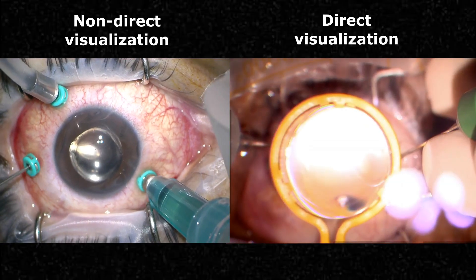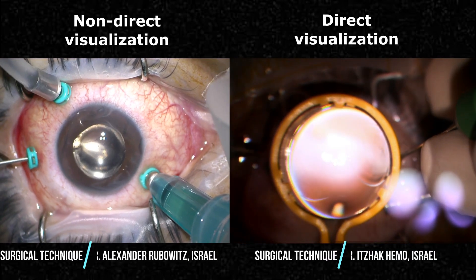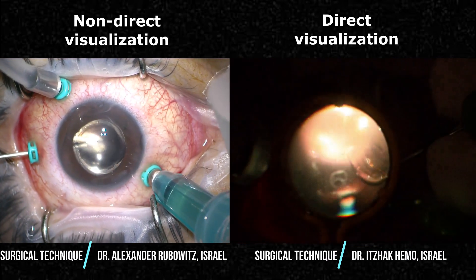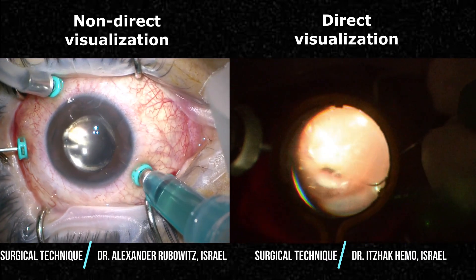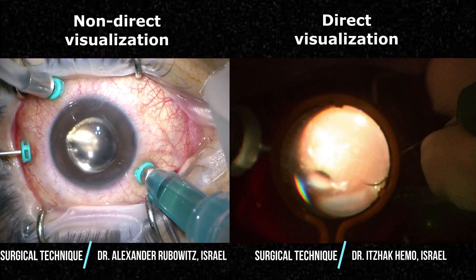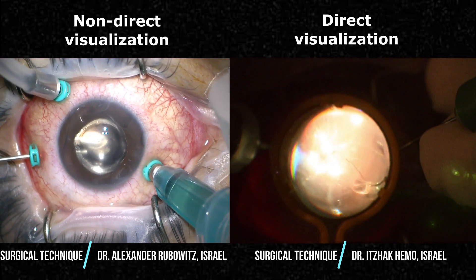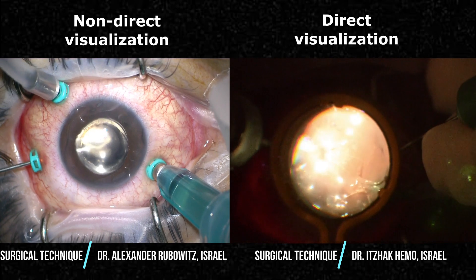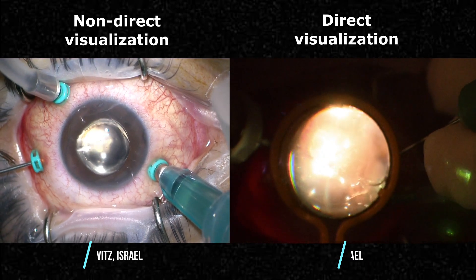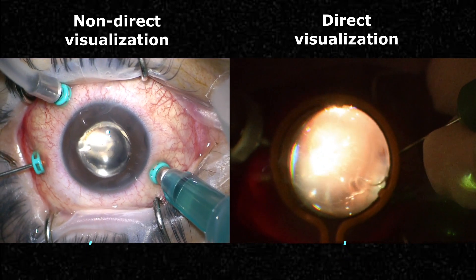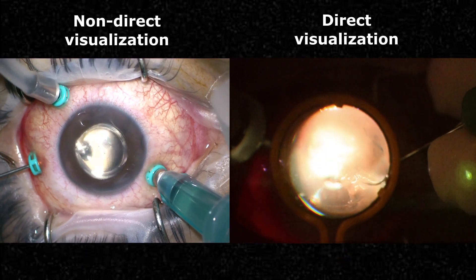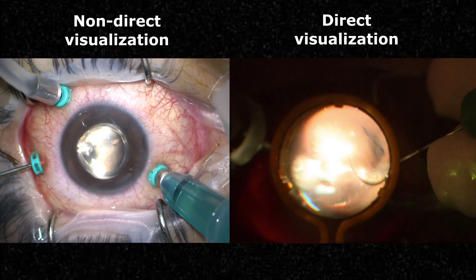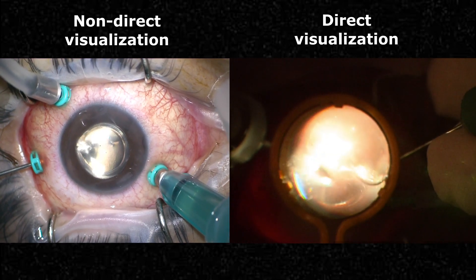Multiple techniques exist for silicon oil injection, as well as for every other step of the surgery. Silicon oil can be injected without direct visualization of the retina, or under direct visualization using the magnification of a non-contact lens. Both techniques can also be combined.